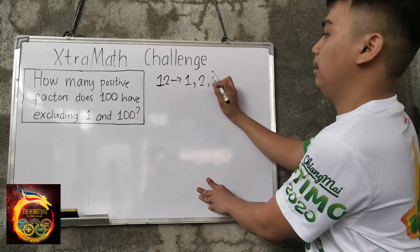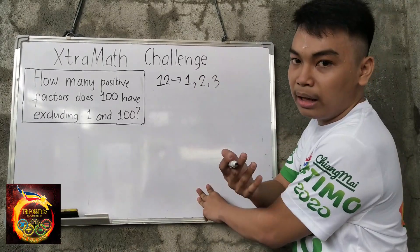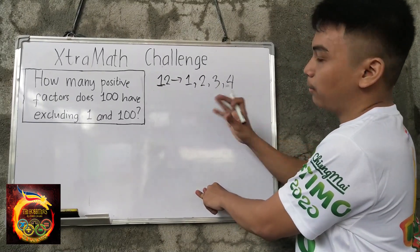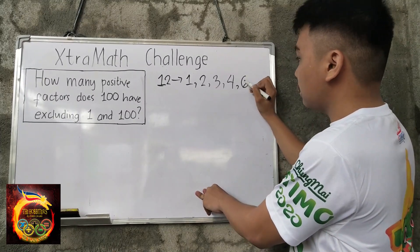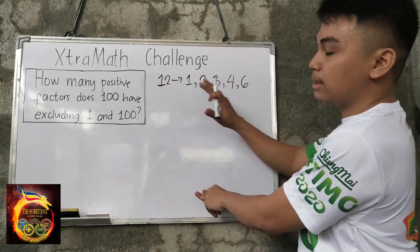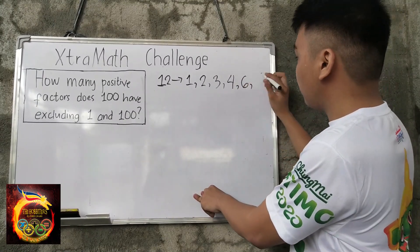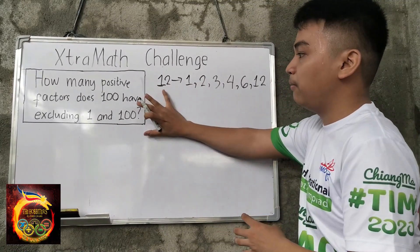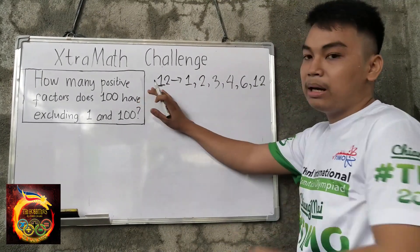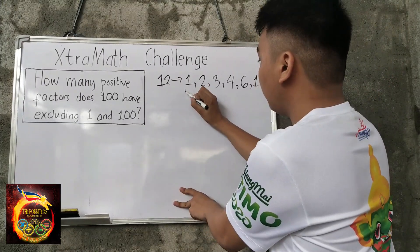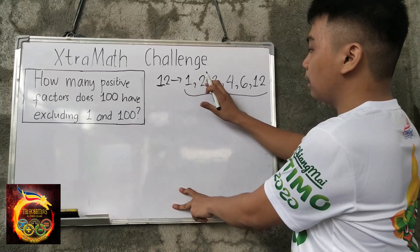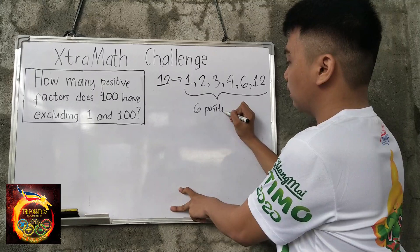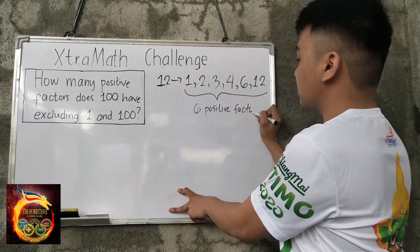Next is 3: 12 divided by 3 is 4, and there's no remainder. Next is 4: 12 divided by 4 is 3, no remainder. Next is 6: 12 divided by 6 is 2. And the last one is 12 itself, since 12 divided by 12 is 1. So counting them — 1, 2, 3, 4, 5, 6 — we have 6 positive factors of 12.